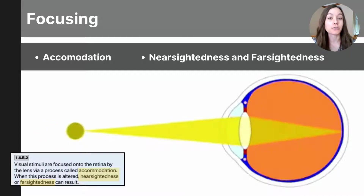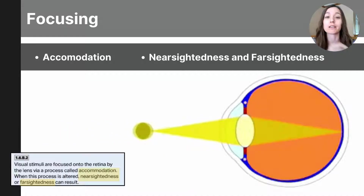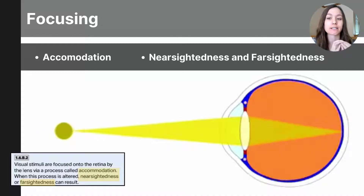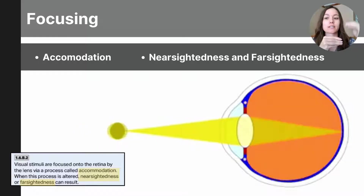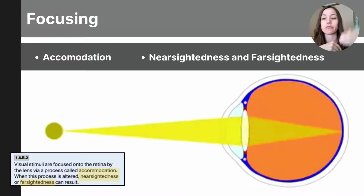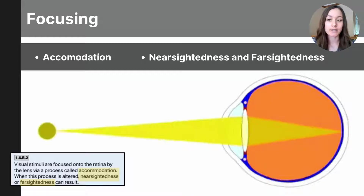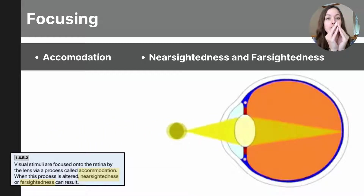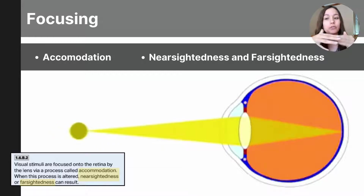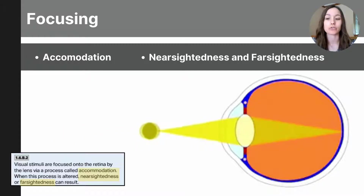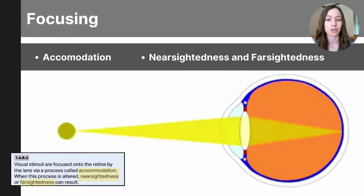Now that you've learned about the structures of the eye, you know that the lens plays an essential part in our eye's ability to focus on objects near and far through a process called accommodation. This process by which the lens changes its shape to focus on objects at different distances is referred to as accommodation.